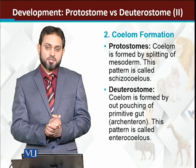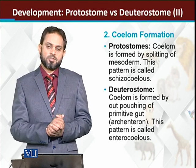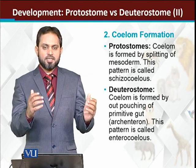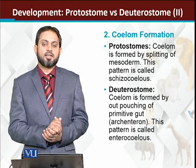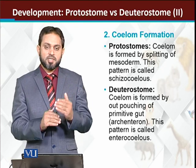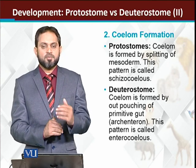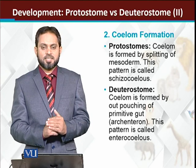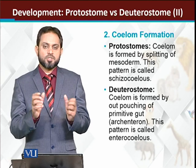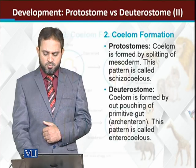While in case of deuterostomes, the coelom is formed by the outpouching of the archenteron. From the archenteron, out-pockets are formed, which later spread between the mesoderm and form the coelom. So the major difference: in protostomes, mesoderm is formed by splitting of mesodermal cells, whereas in deuterostomes, coelom is formed by the outpouching of the archenteron.